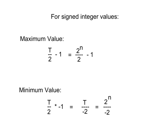For negative numbers, the minimum value is the total number of possibilities divided by 2, but made into a negative number. Another way of saying that is the total number of possibilities divided by negative 2. And since the total number of possibilities is 2 to the power of n, where n is the number of bits, you can simply say 2 to the power of n divided by negative 2 will give you your lowest possible negative number.